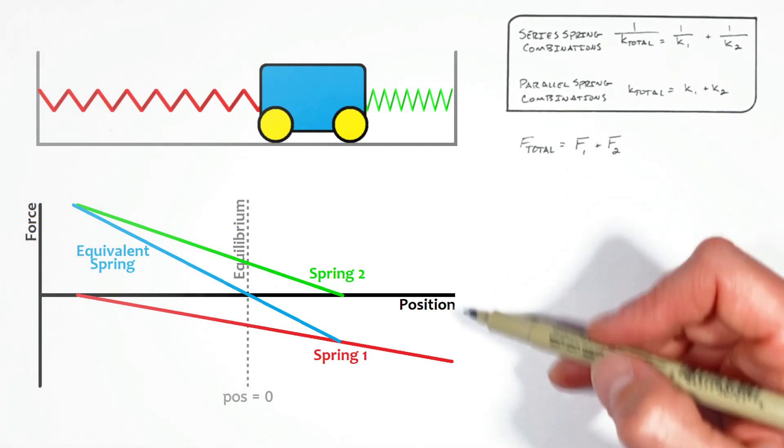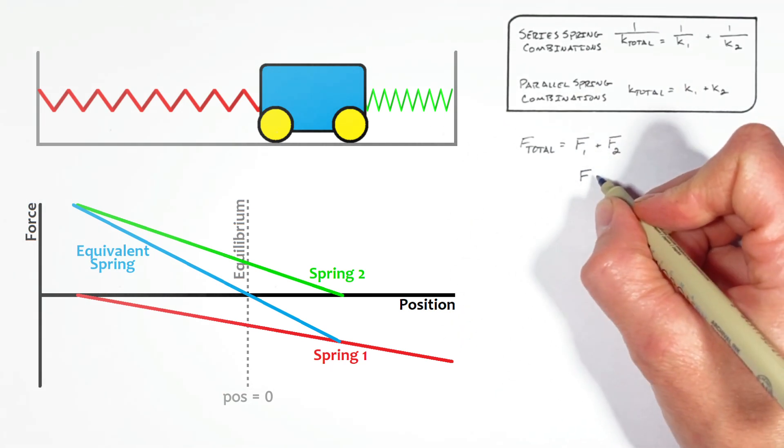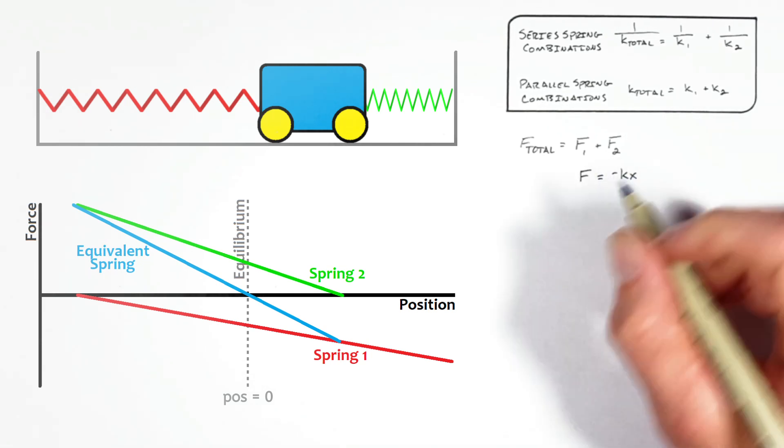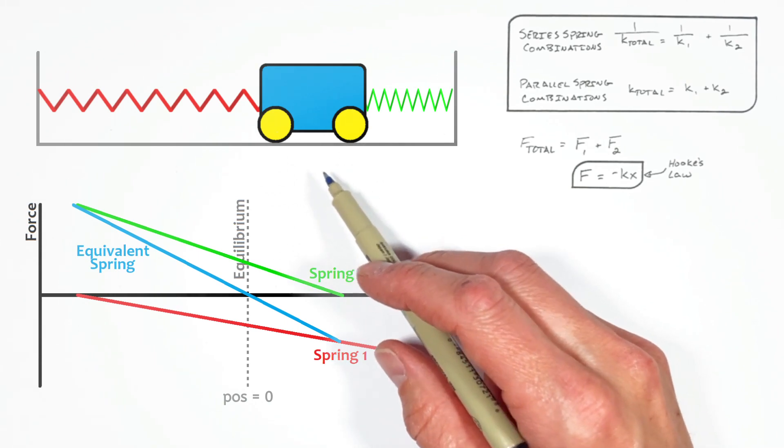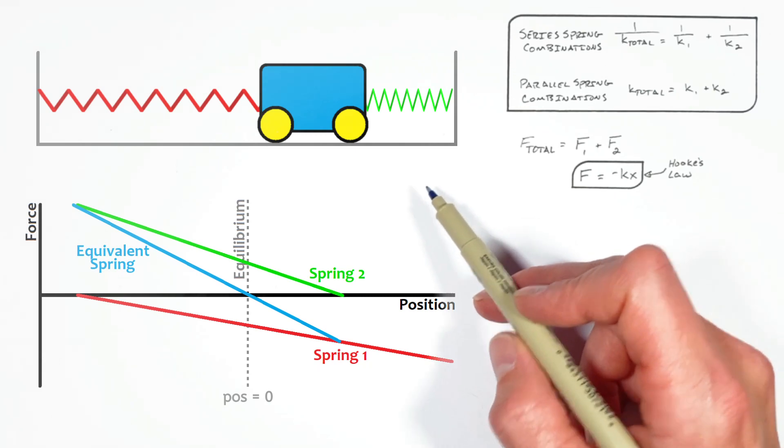Now, the hangup that a lot of people run into here has to do with Hooke's Law, which you typically see as f is equal to negative kx. But the problem in this situation is that this equation doesn't take into account the fact that each of these springs are initially stretched.